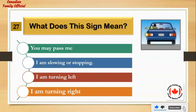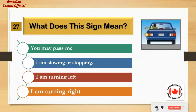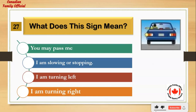What does this sign mean? Number 1: you may pass me. Number 2: I am slowing or stopping. Number 3: I am turning left. Number 4: I am turning right. And the answer is: I am turning left.